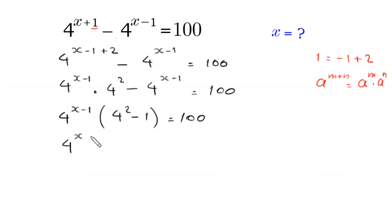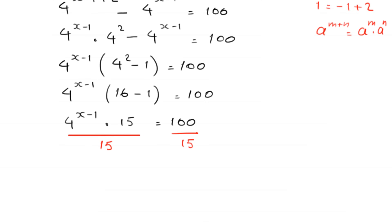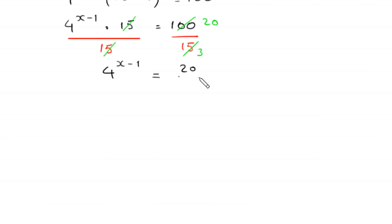Next, 4 to the power x minus 1 times 4 squared is 16, so 16 minus 1 is 15. We get 4 to the power x minus 1 times 15 is equal to 100. From here we divide both sides by 15. The 15 cancels out, leaving 4 to the power x minus 1 is equal to 100 over 15, which simplifies to 20 over 3.